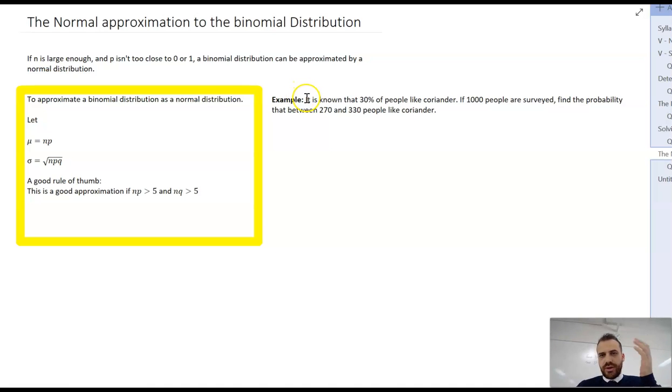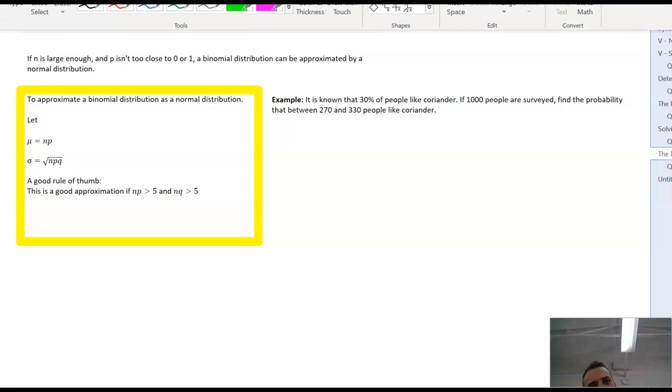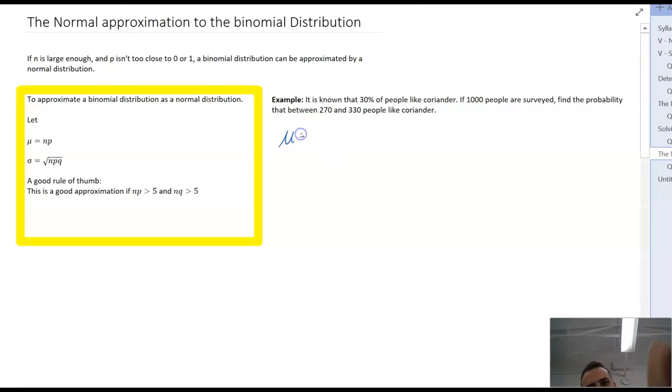An example of doing this, it is known that 30% of people like coriander. So that's our p, success is liking coriander. If 1,000 people are surveyed, find the probability that between 270 and 330 people like coriander. So it's a binomial distribution, but we can approximate it as a normal distribution. So our mean, let's get my pen here. My mean is equal to the number of trials, 1,000, times probability of success, 0.3. So that's 300.